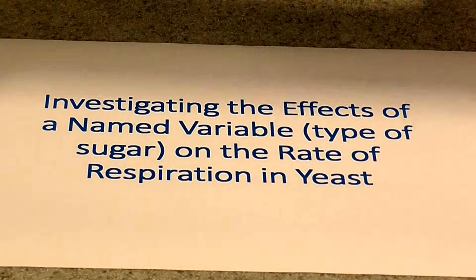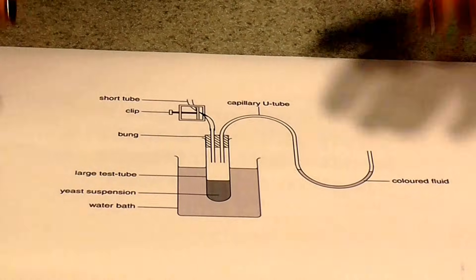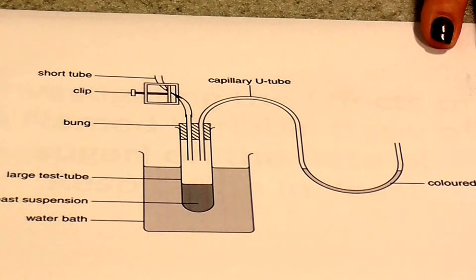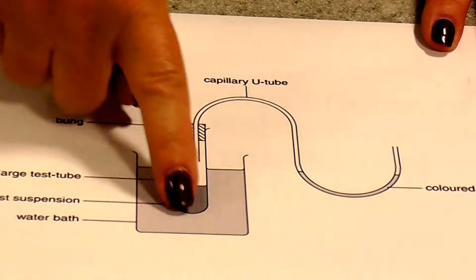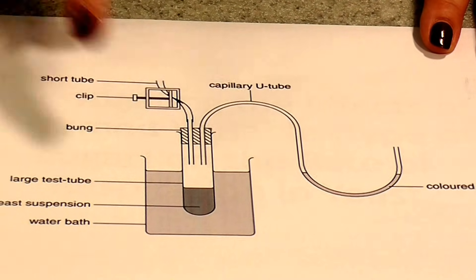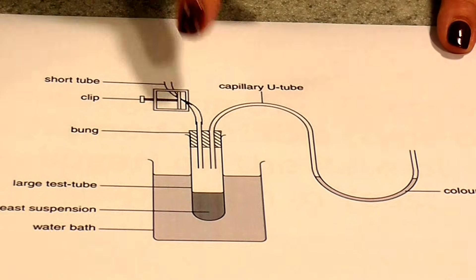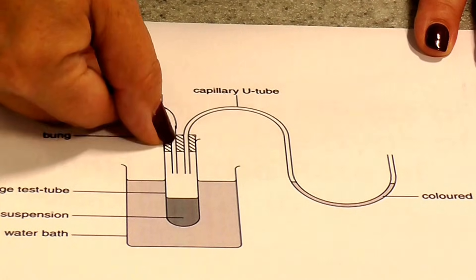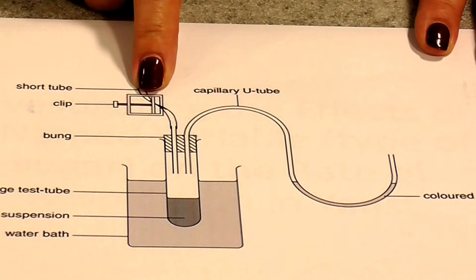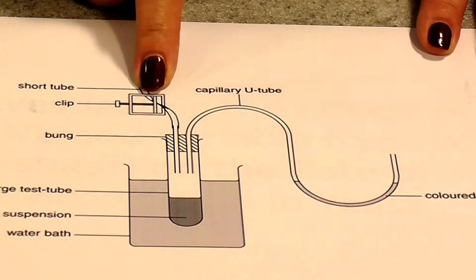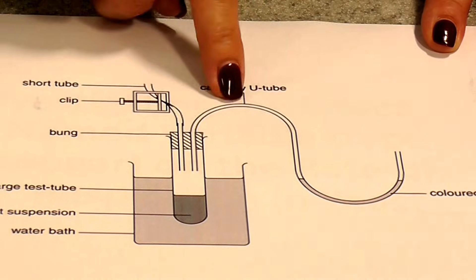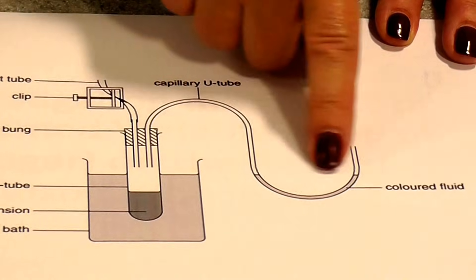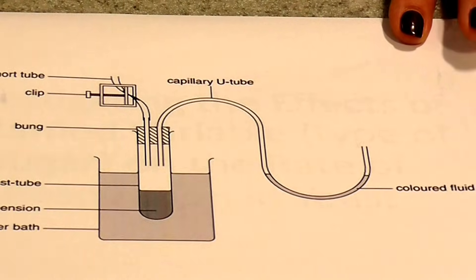To carry out this investigation, this is the apparatus you will need. You'll need a beaker to use as a water bath, adjusting its temperature with hot and cold water. You'll need a number of boiling tubes, and a bung with a flexible tube with a clip that can be opened and closed, and a plastic or glass capillary U-tube into which you've introduced a coloured fluid.